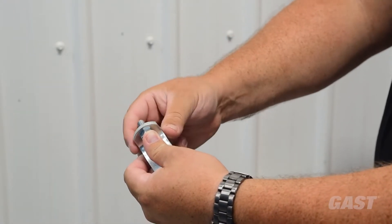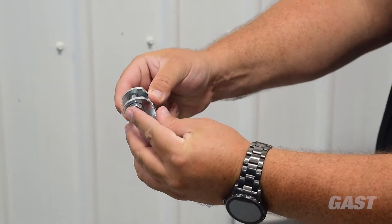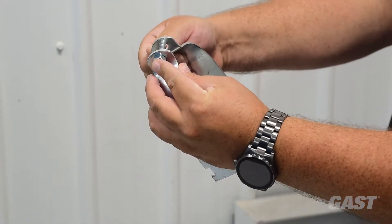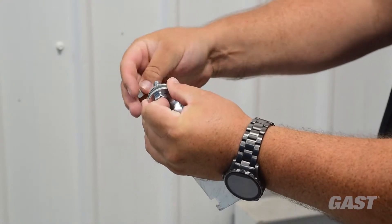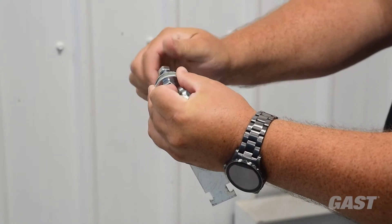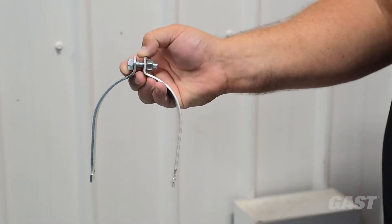Using the appropriate pipe clamps for the size riser pipe you are installing the air compressor system onto, remove the nut from the bolt and turn one clamp around and reinstall the nut bolt loosely.